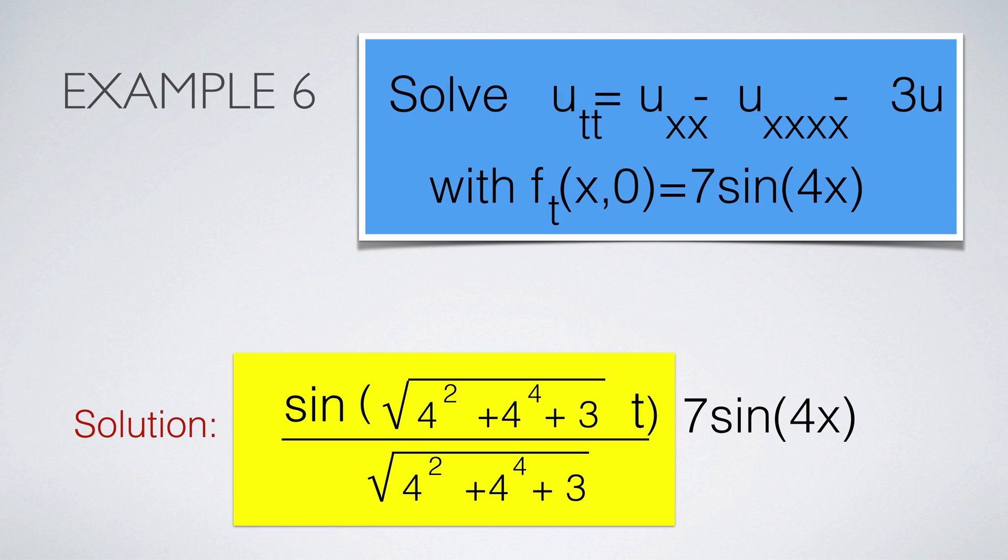And finally, the same function but as an initial velocity. We have to remember to divide by the square root of minus the eigenvalue as differentiation will cancel that and lead to the initial velocity at t equal to 0.